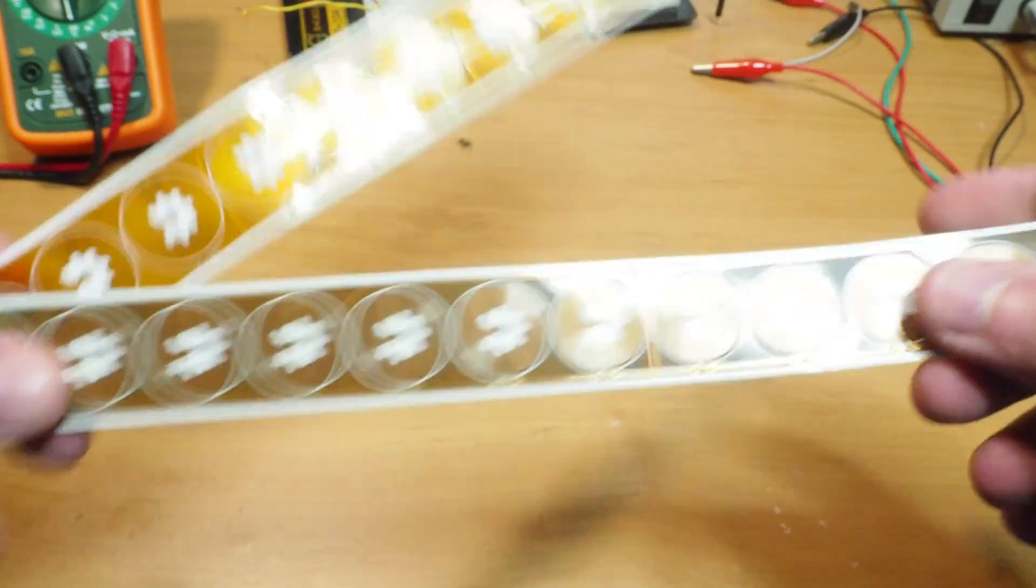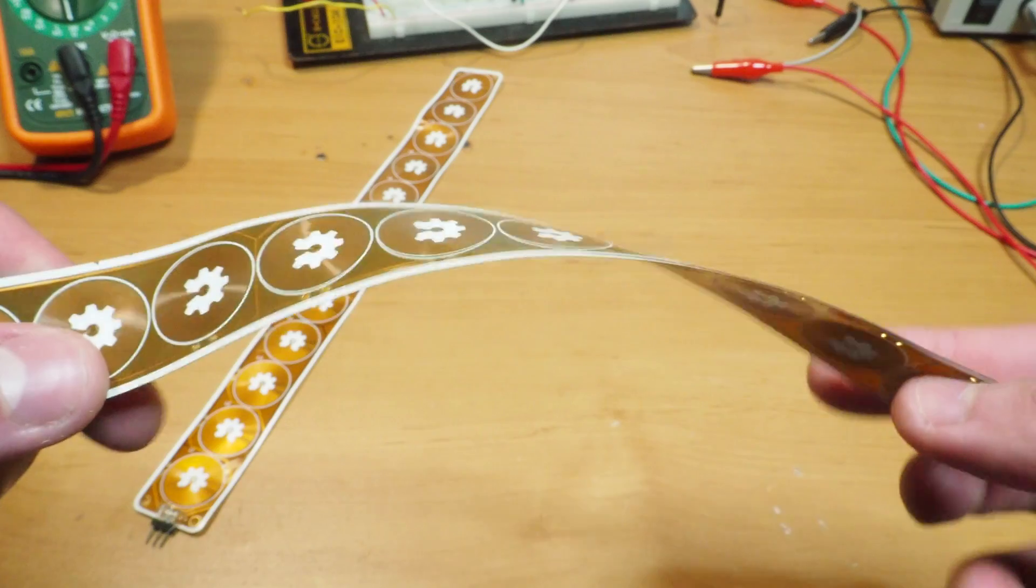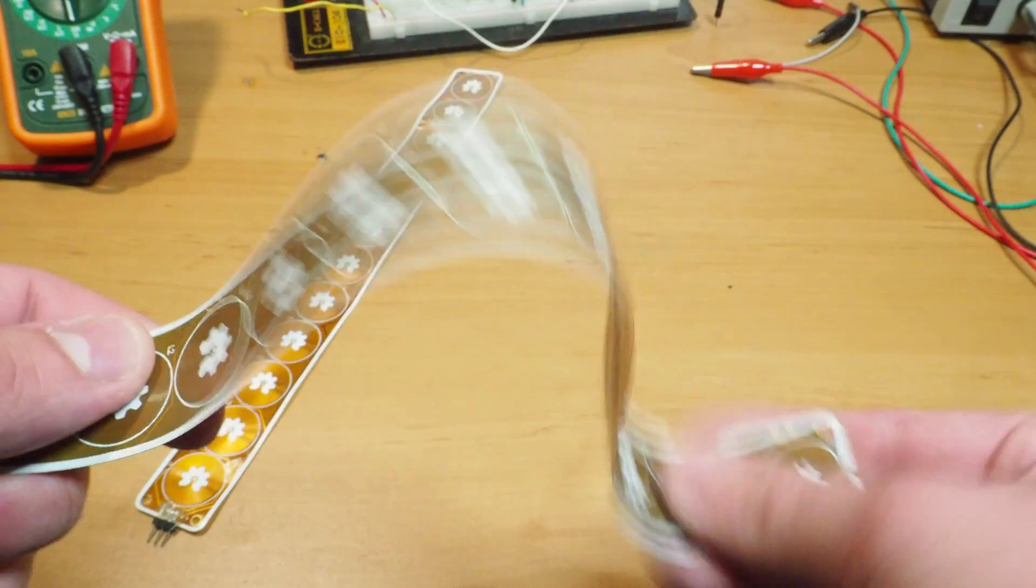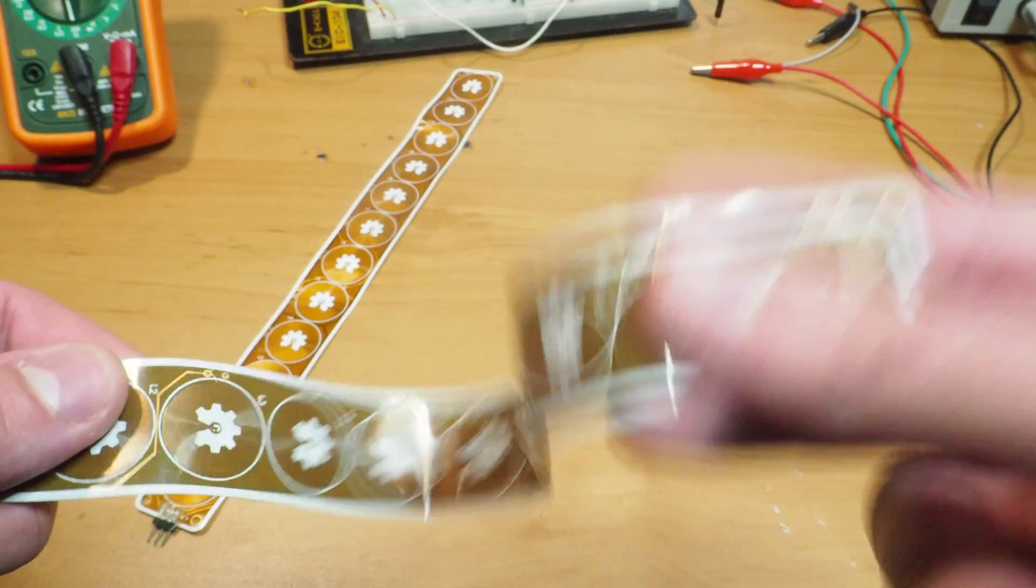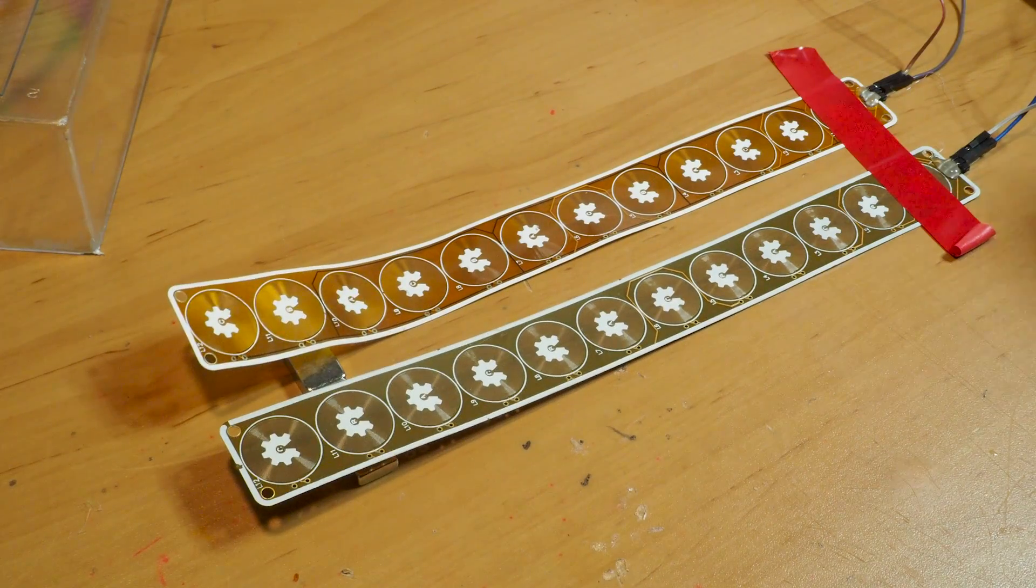The next test is the bend test. Remember that the 0.3mm thick PCB coil is being driven with more current, so I'm curious to see if this extra power can lead to the same bending results. The test I'm going to run is very simple. I'm just going to place two magnets underneath the two PCBs, repel the coils, and measure the bending distance.